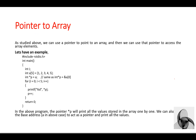For pointer to array: we can use a pointer to point to an array and then use that pointer to access array elements. Inside the main function, we declare a loop variable i, array a of size 5 with elements 1, 2, 3, 4, 5, and an integer pointer p. We write `int *p = a;` or `int *p = &a[0];` — both statements are the same, meaning p points to array a.